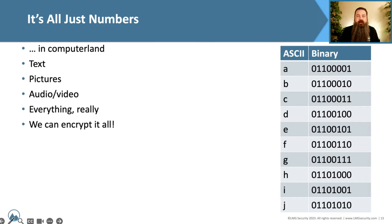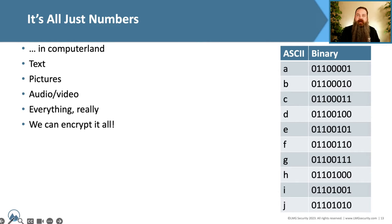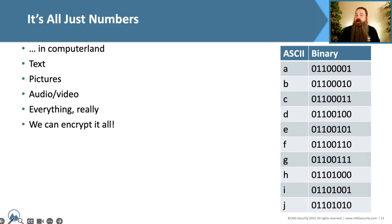The longer the key, the harder the encryption is to crack. So when you see things like RSA 2048 or RSA 4096 as encryption standards, that 2048 and 4096 — what they're referring to is the length of the cipher they're using to actually encrypt that data. Bigger equals better in most cases.